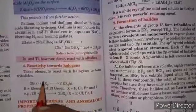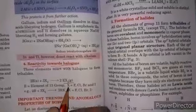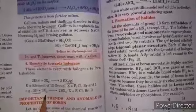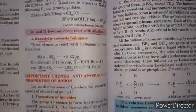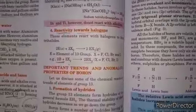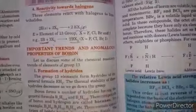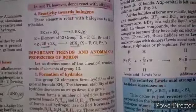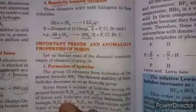Next, reactivity towards halogens. When boron reacts with halogen (fluorine, chlorine, bromine, iodine) it forms trihalides. Next, important trends and anomalous properties of boron compounds.